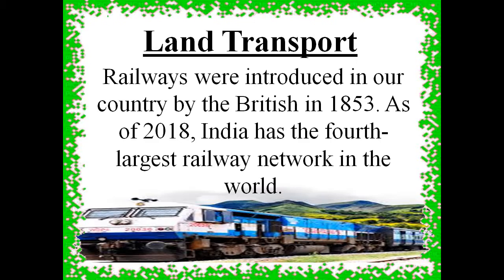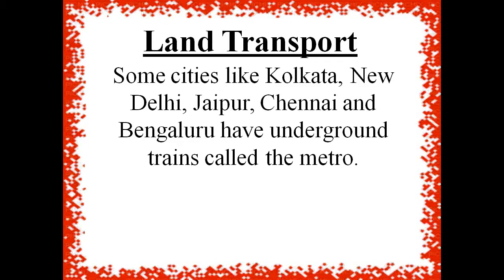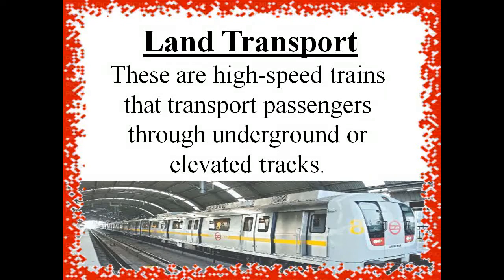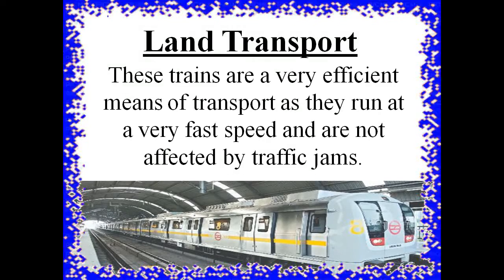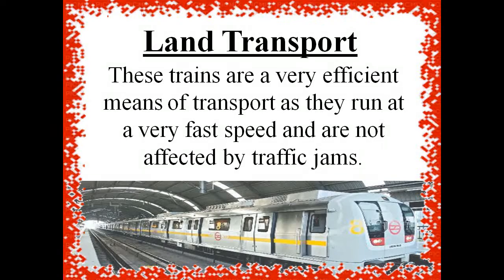Some cities like Kolkata, New Delhi, Jaipur, Chennai, and Bengaluru have underground trains called the metro. These are high-speed trains that transport passengers through underground or elevated tracks. These trains are a very efficient means of transport as they run at a very fast speed and are not affected by traffic jams.